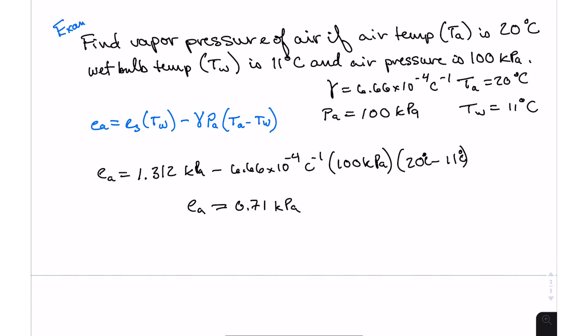Let's actually put this into a calculation. Here's an example. Find the vapor pressure of the air if air temperature TA is 20 degrees Celsius, the wet bulb temperature TW is 11 degrees Celsius and air pressure is 100 kilopascals, so we're basically at sea level. Just to remind us, this is the constant gamma, 6.66 times 10 to the negative four degrees C to the negative one. Air pressure 100 kilopascals. The dry bulb is 20 degrees Celsius and the wet bulb is 11 degrees. We take this standard equation I showed and actually insert all these numbers into the equation.